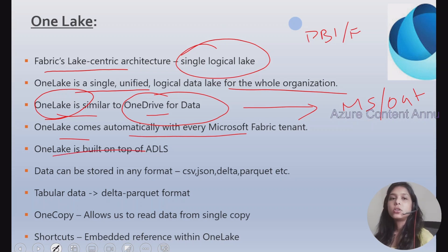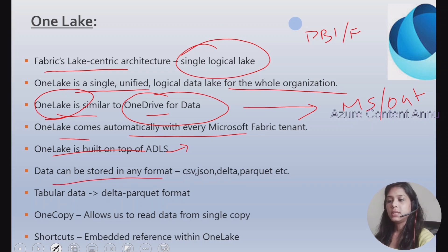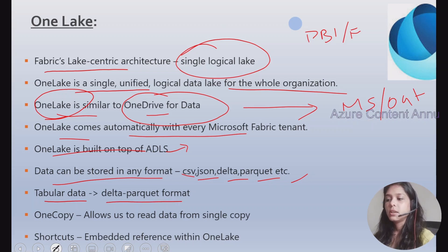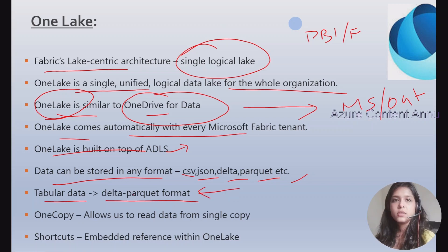One Lake is built on top of ADLS — Azure Data Lake Storage — which is the storage offering of Azure. Data can be stored in One Lake in any format like CSV, JSON, Delta Parquet, etc. The data resides in One Lake as an open format, and if you have tabular data it will be read in the Delta Parquet format. Delta Parquet is the default format for tabular data stored in One Lake, as it is the most compressed format.